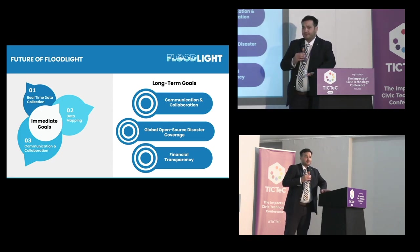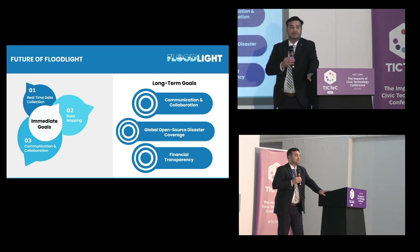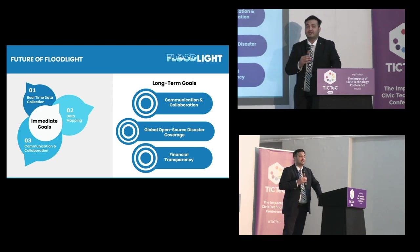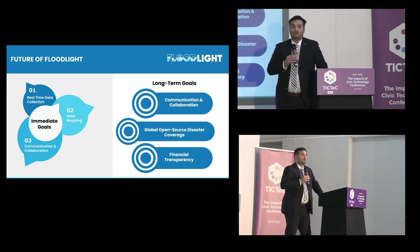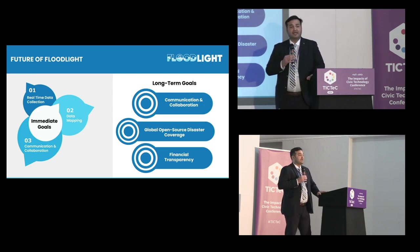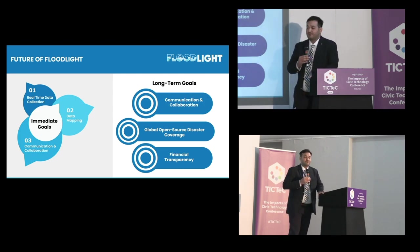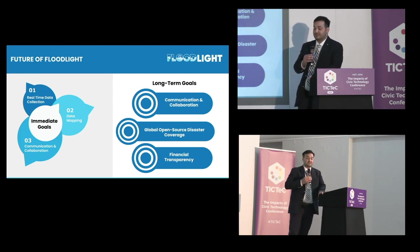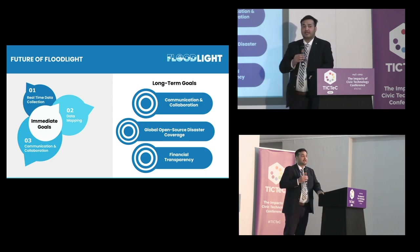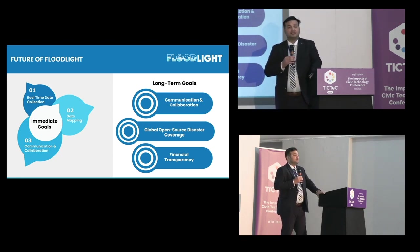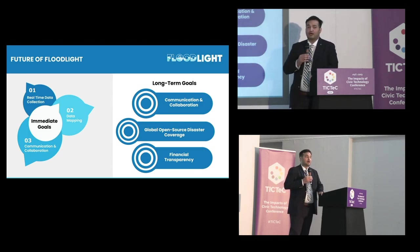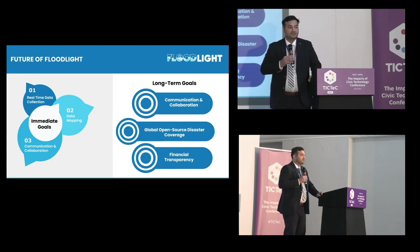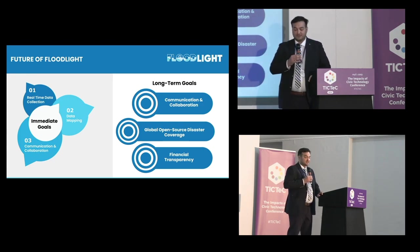Going back to the three main challenges that led us to start Floodlight: we want to expand Floodlight to get better real-time data so we can scale it. We want to use Floodlight as a platform to enable government bodies, aid organizations, and volunteers to share resources effectively. We also want to scale Floodlight to cover other natural disasters to create a global platform for disaster relief and rehabilitation, and remain open source so other organizations and volunteers can tailor the platform to meet their specific needs.